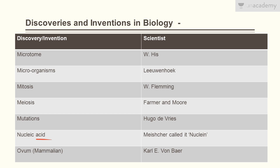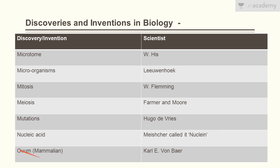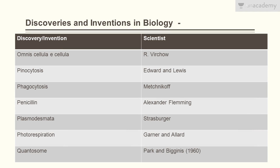Mutations were discovered by Hugo de Vries. Nucleic acid was discovered by Miescher — he called it Nuclein. The mammalian ovum was discovered by Karl Ernst von Baer.